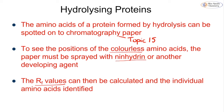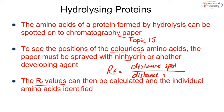Once we've sprayed with ninhydrin, we can then calculate our RF value. Remember, an RF value is the distance moved by the spot divided by the distance of the solvent front, and it should always be less than one. If you ever get an RF value above one then you have made a mistake in your calculation. By calculating these RF values we can compare them to specific values calculated in a laboratory from control samples and then identify the individual amino acids.